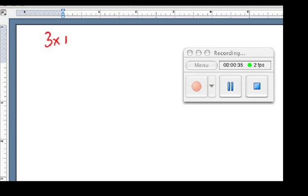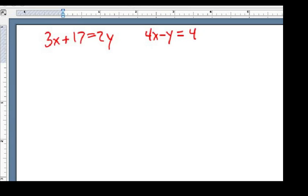3x plus 17 equals 2y. That's one equation. And 4x minus y equals 4. This becomes a system of equations. And I notice that on this equation here, I can figure out what x is in terms of y and substitute it in to the first equation.